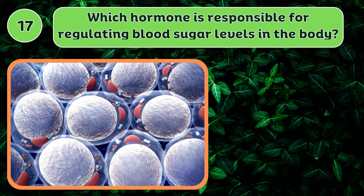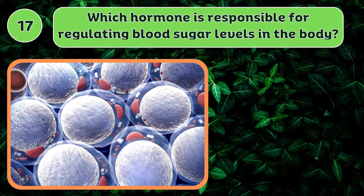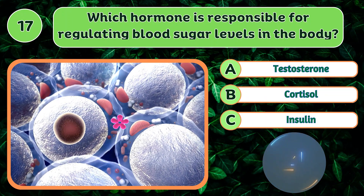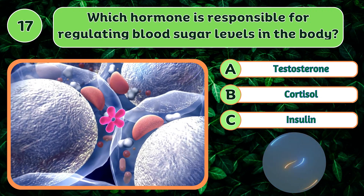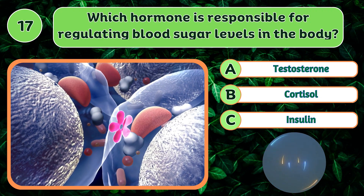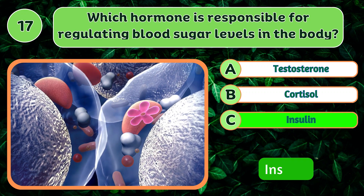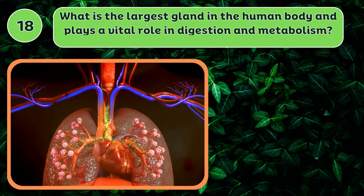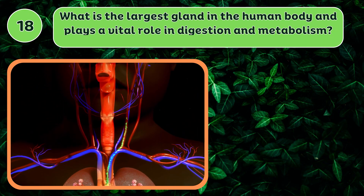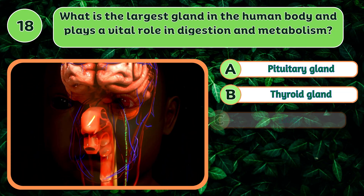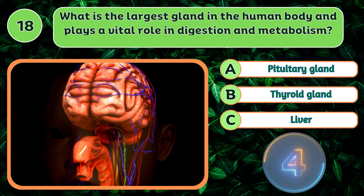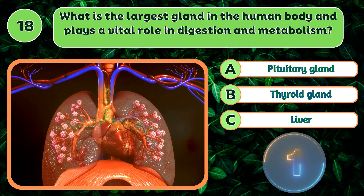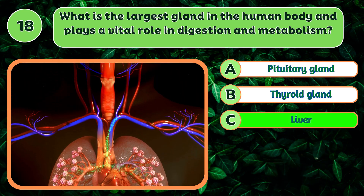Which hormone is responsible for regulating blood sugar levels in the body? Insulin. What is the largest gland in the human body and plays a vital role in digestion and metabolism? Liver.